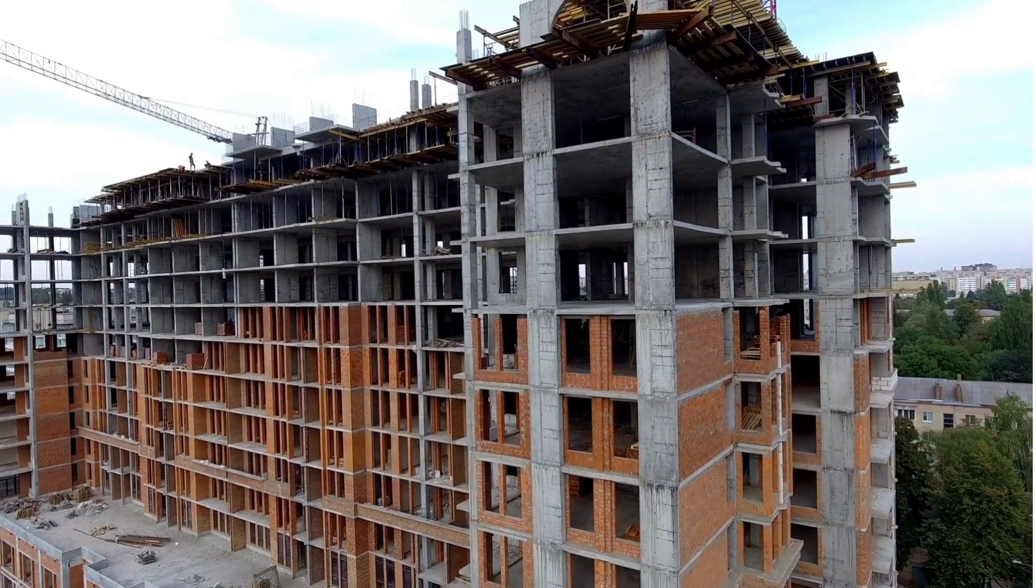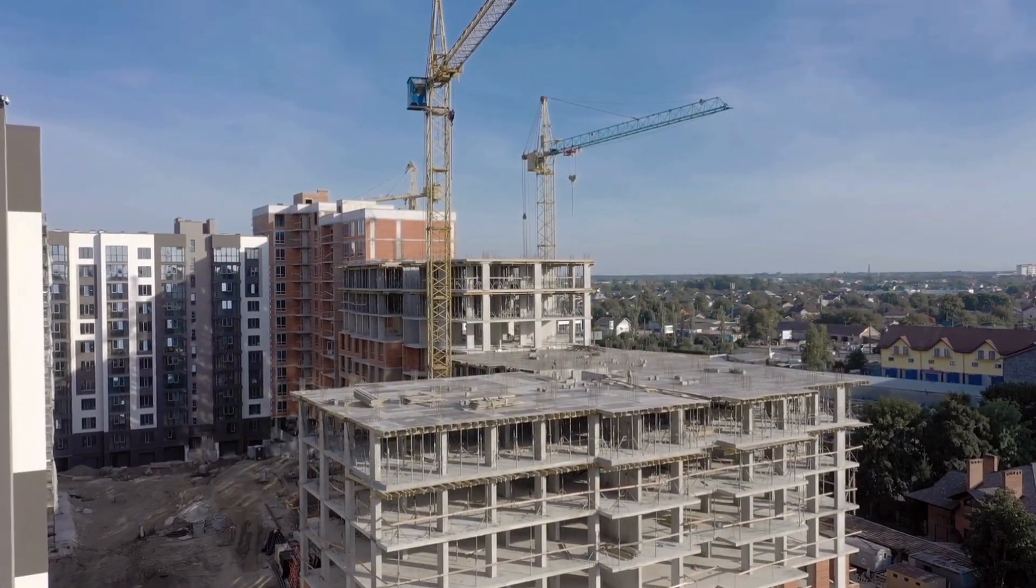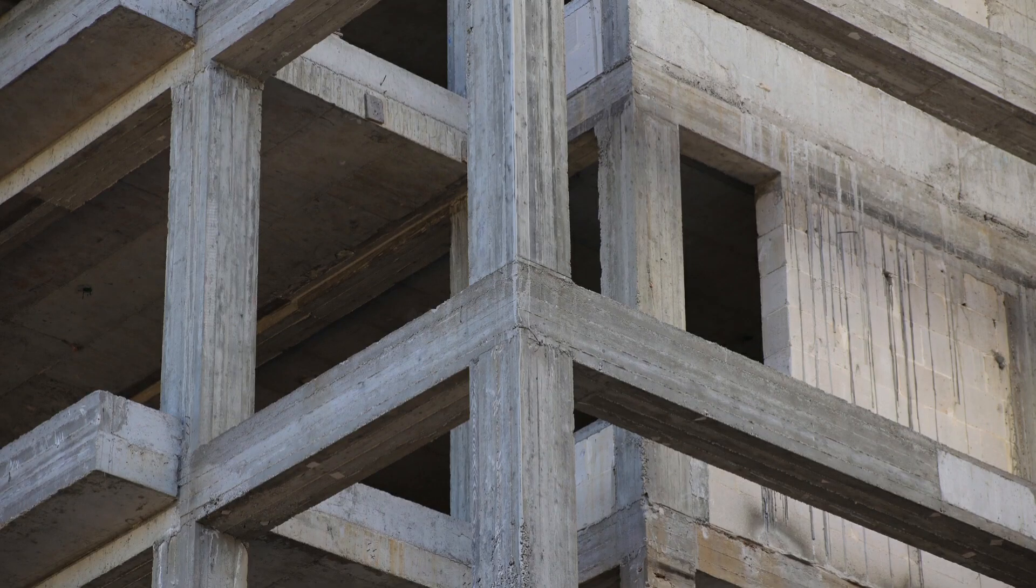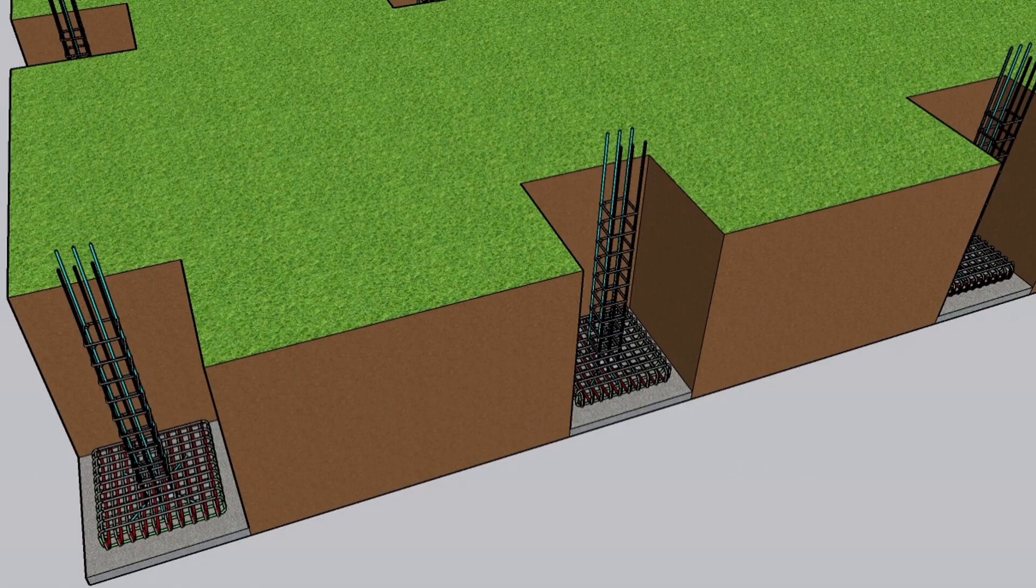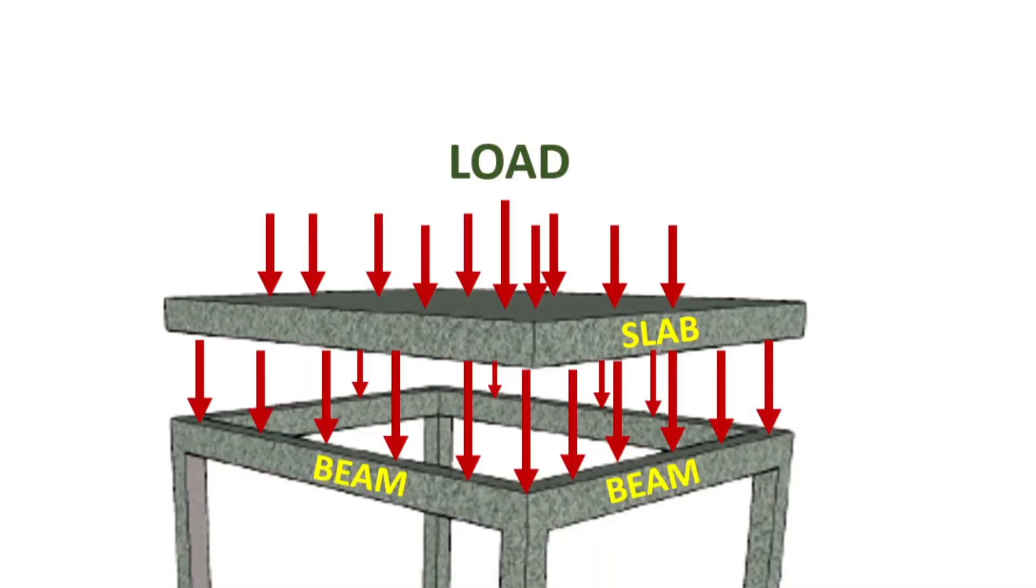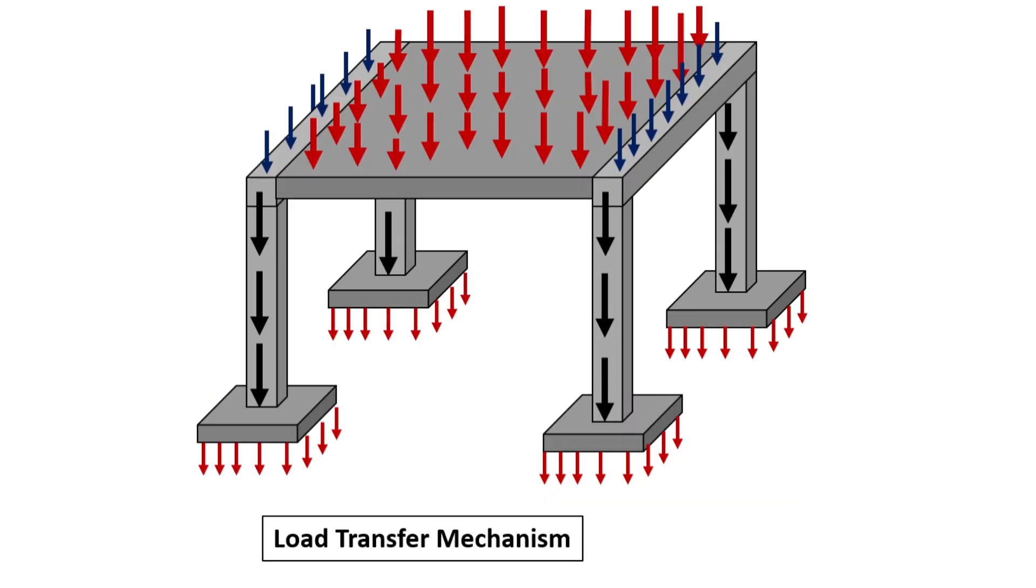A framed structure is a type of construction that's made up of various structural elements such as slabs, beams, columns and foundations that work together to transfer and distribute the loads throughout the building. The load transfer mechanism in a framed structure refers to the way that loads are transmitted from one element to another and eventually to the ground.